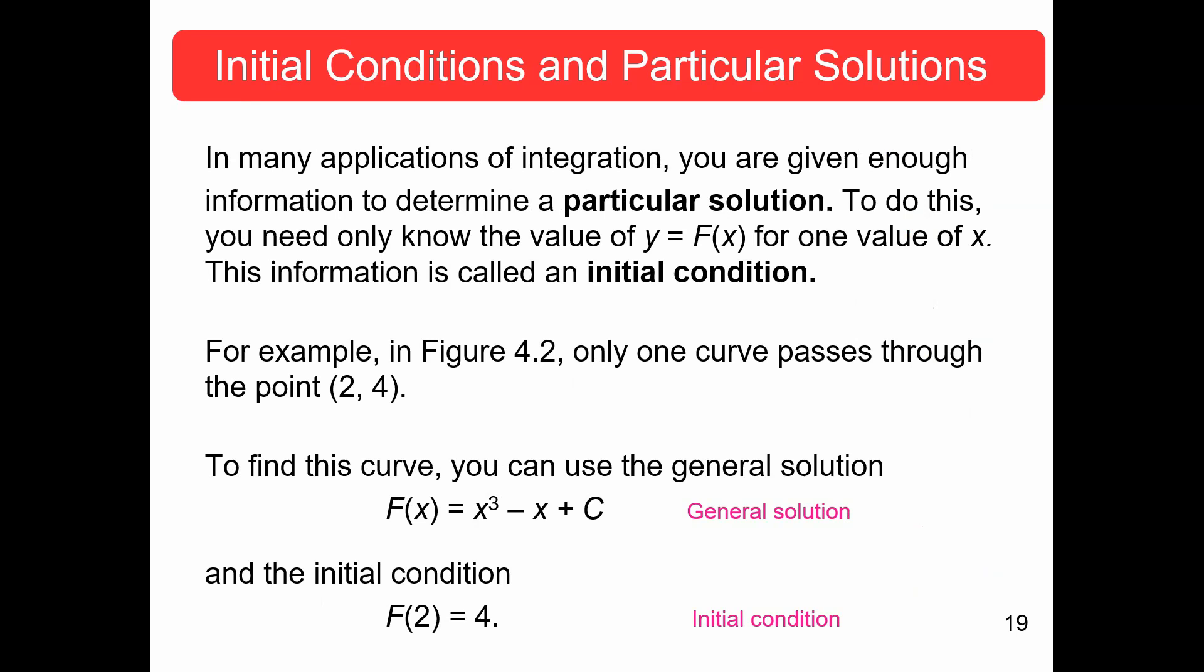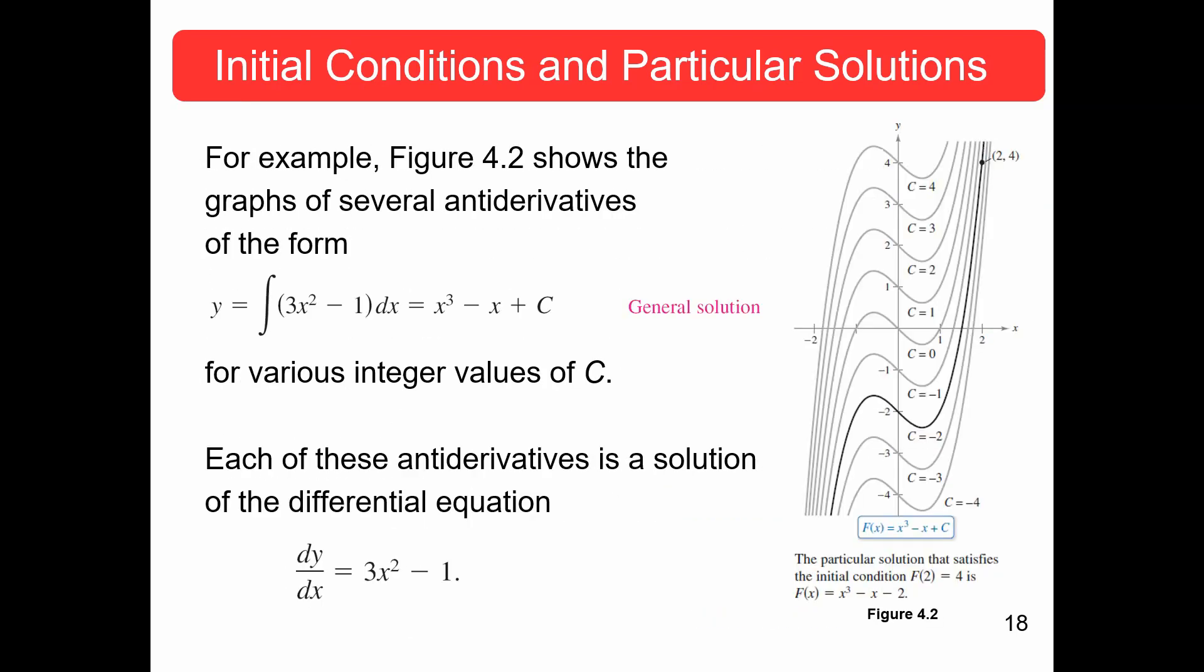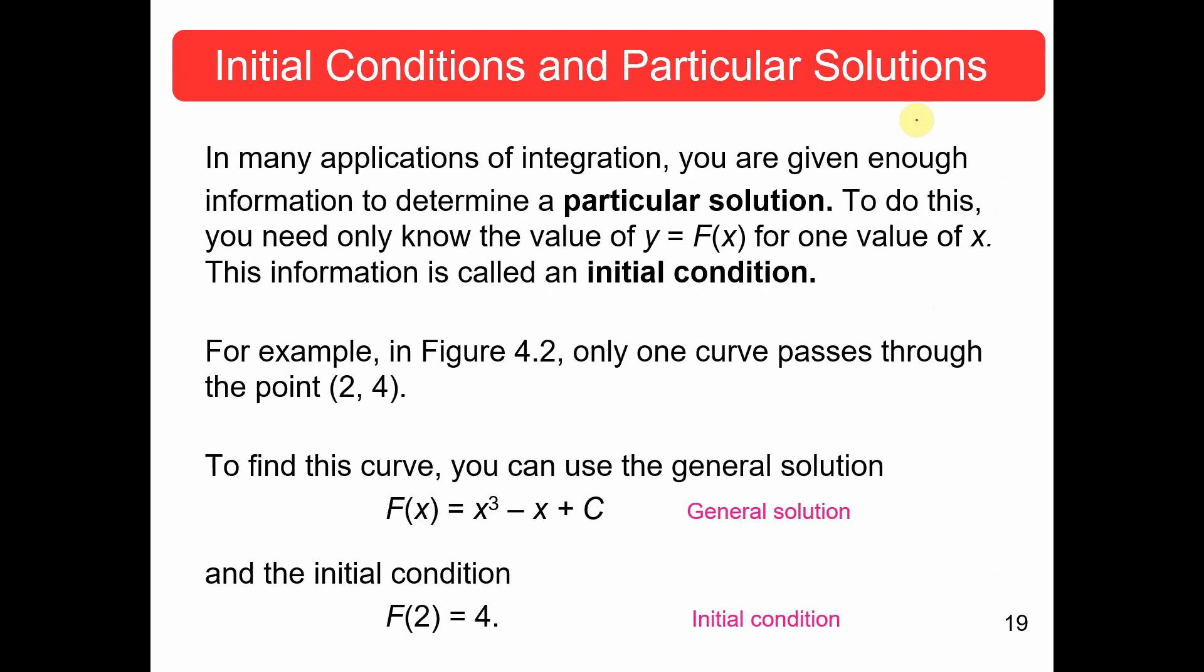For example, notice in figure 4.2, only one curve passes through the point 2, 4. So, if I'm given that f of 2 equals 4, then I can solve that as an initial condition. How do I do that? Well, I know x equals 2 when f of x equals 4.